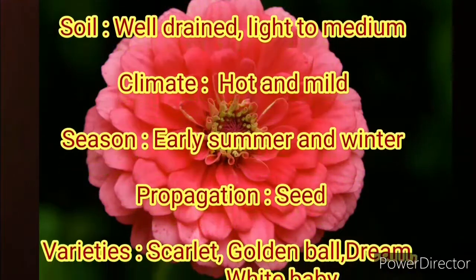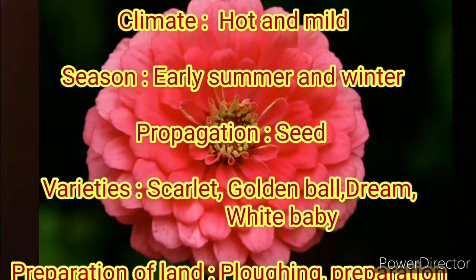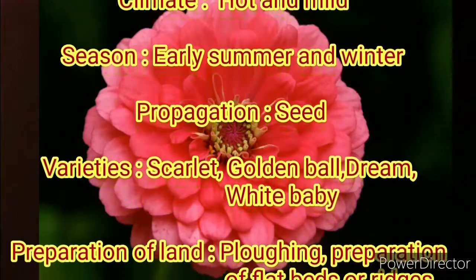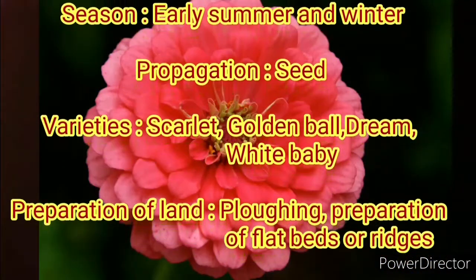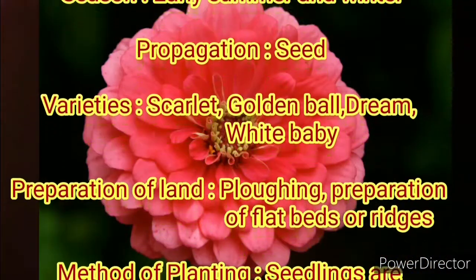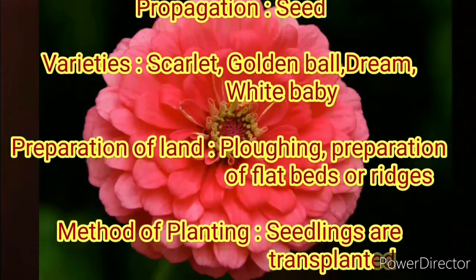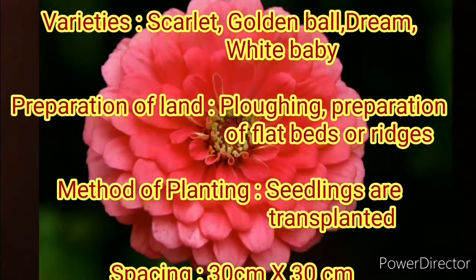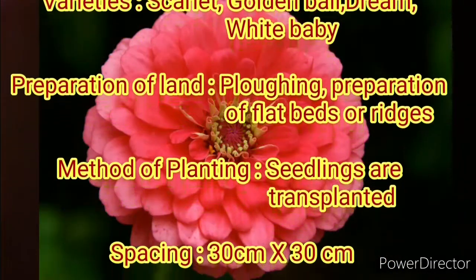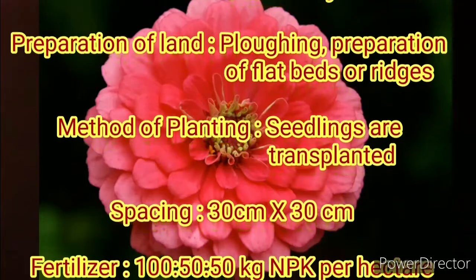Propagation is done through seeds. Varieties are Scarlet, Golden Ball, Dream, and White Baby. Preparation of land can be done by plowing and by preparing flatbeds or ridges. Method of planting is by transplanting of seedlings.